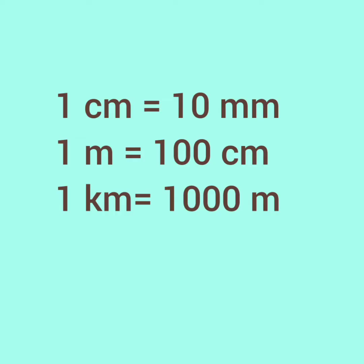These are some standard units of conversion for length: 1 centimeter is equal to 10 millimeters; 1 meter is equal to 100 centimeters; 1 kilometer is equal to 1000 meters.